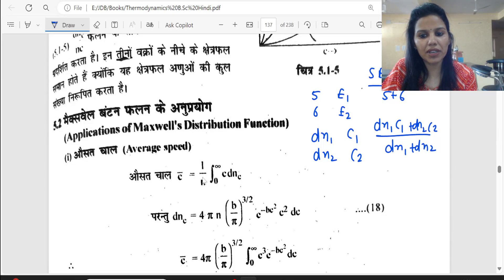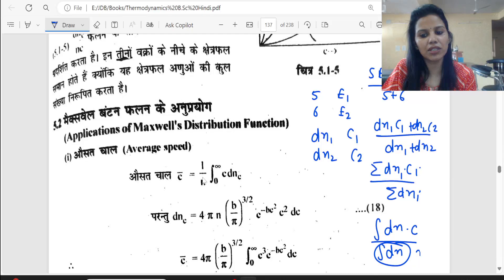I will do the integration here. Summation dNi·Ci upon summation dNi. In integration, integral dN·C upon integral dN. And the integral dN means that the total number is N. This is the formula here.